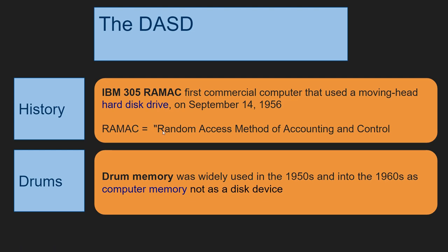RAMAC stands for Random Access Method of Accounting and Control. Accounting was the focus at the time — the IBM 305, 605, 705, and 650 mainframes were all mainly geared at accounting and processing records. That's why we still have a record-oriented history and tradition on the mainframe today, because it all started with processing accounting records, census records, and so on.